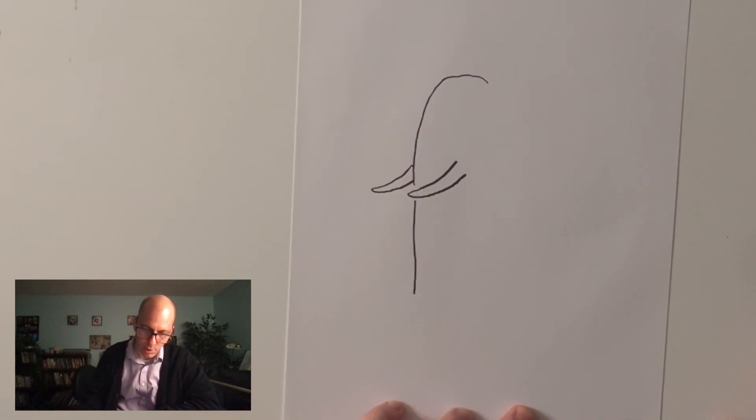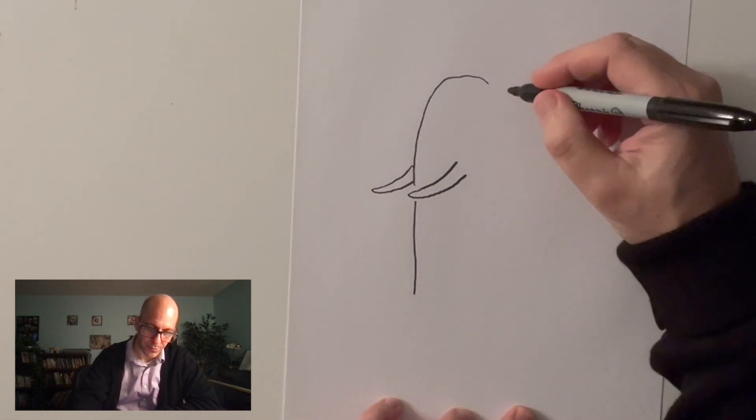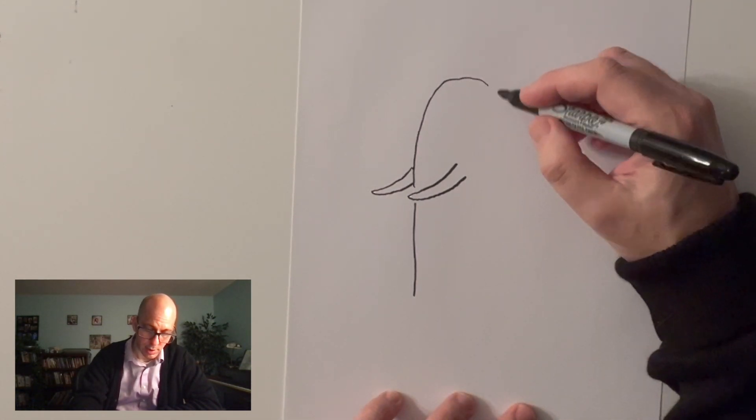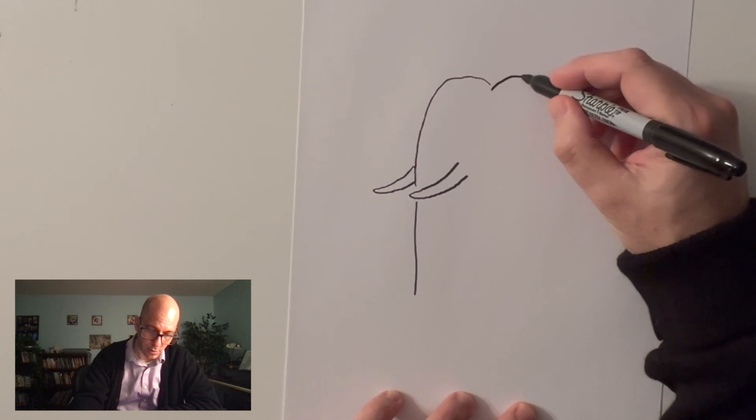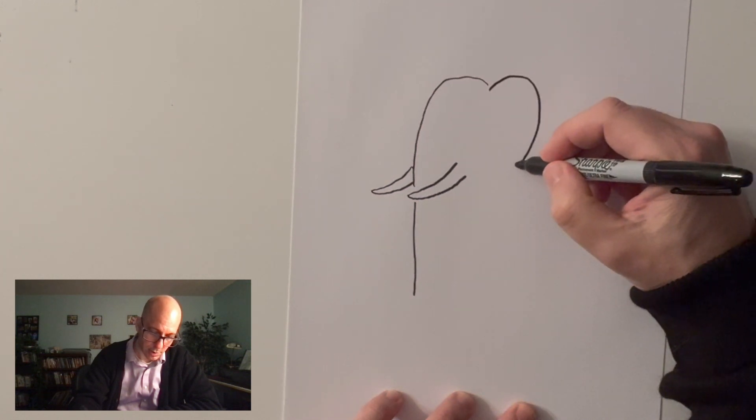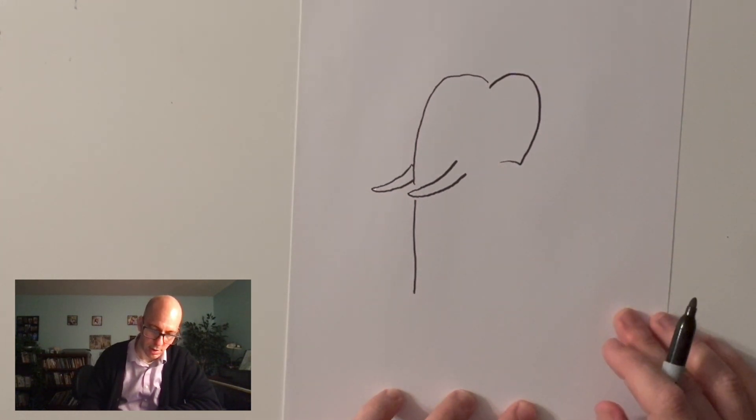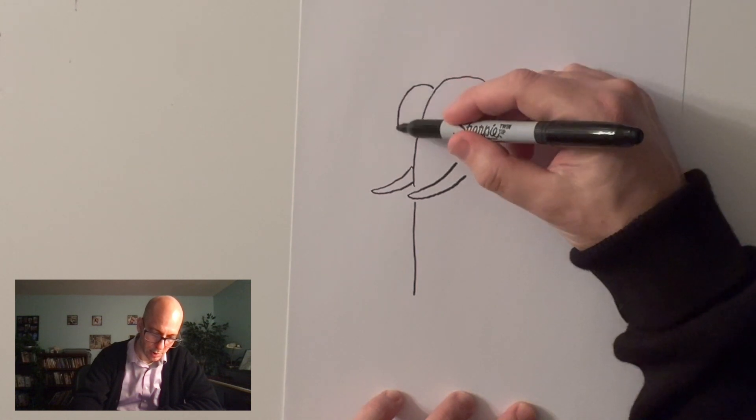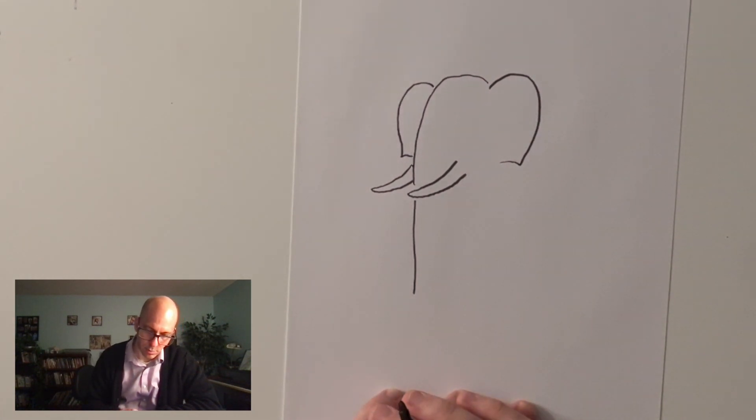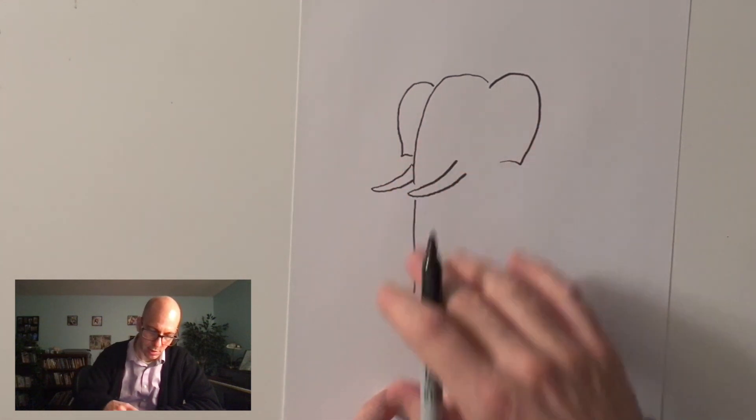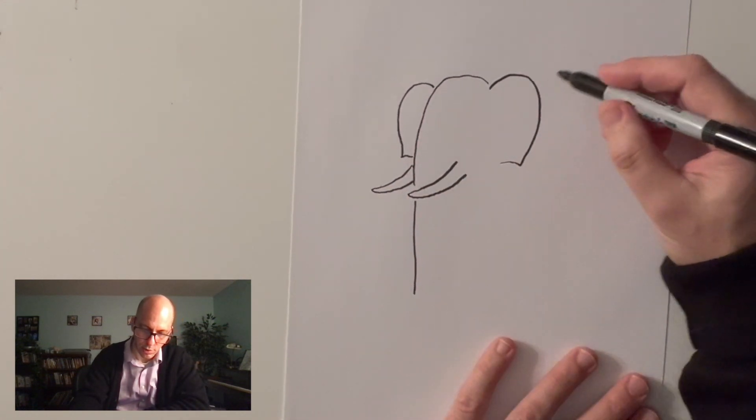This is really simple so far, right? From here, I like to draw an ear. So, once again, you can get really complicated with this, but just a simple thing like that and put it on the other side too. There we go. We've got our elephant's head, ear, and we'll come back to that really important trunk in just a second.